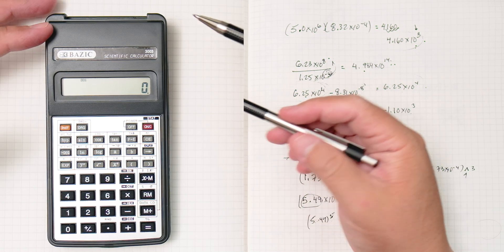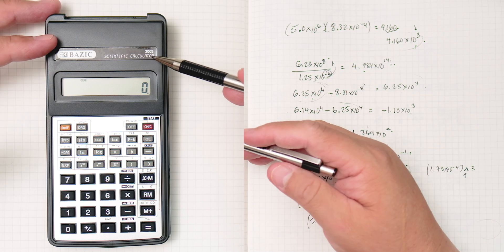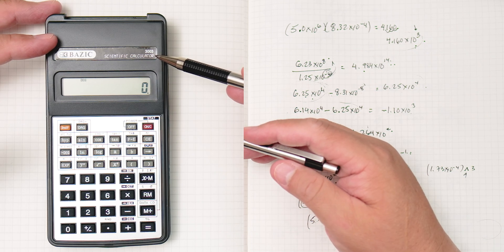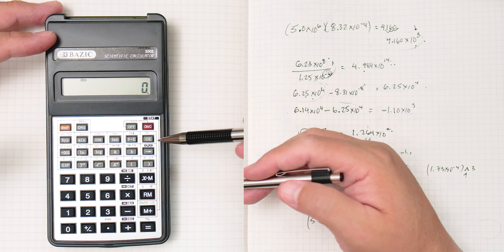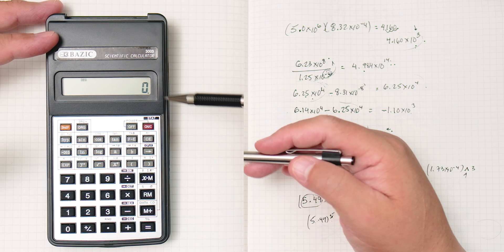Okay, in this video we're going to do scientific notation with the basic or basic 3003 calculator. This calculator you can find sometimes at the 99 cents store, but not for 99 cents anymore.